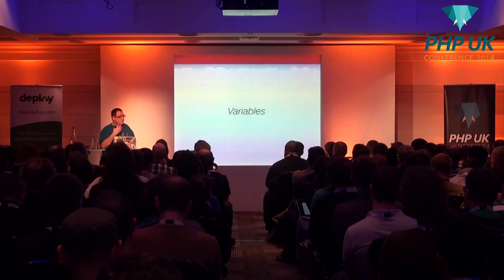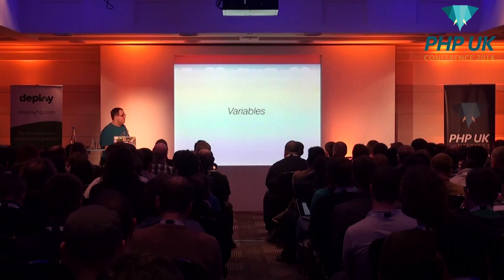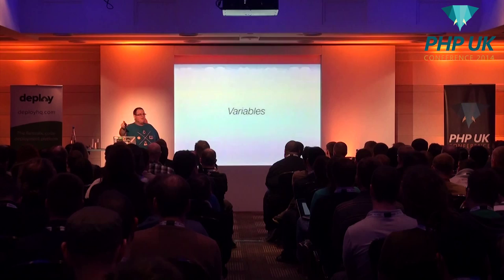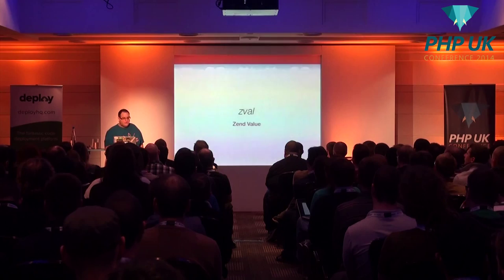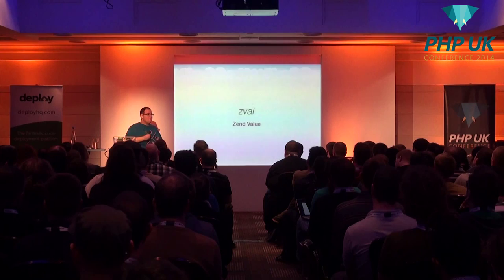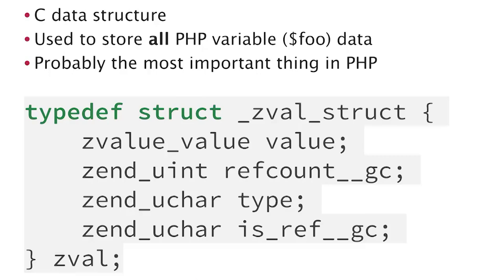Talking a bit more about variables — PHP is all about variables, if you don't have variables it's a pretty terrible language. Under the hood we use things called zVals, or Zend Values. These are a C data structure used to store all PHP variable data, regardless of type. They're probably the most important thing in PHP.